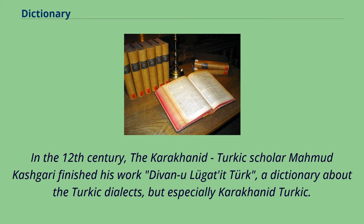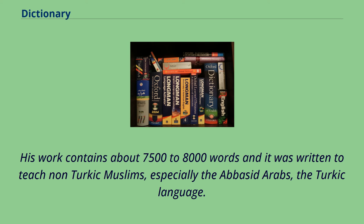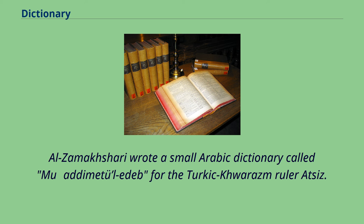In the 12th century, the Karakhanid Turkic scholar Mahmud Kashgari finished his work Diwan Lughat al-Turk, a dictionary about the Turkic dialects, but especially Karakhanid Turkic. His work contains about 7,500 to 8,000 words and it was written to teach non-Turkic Muslims, especially the Abbasid Arabs, the Turkic language. Al-Zamakhshari wrote a small Arabic dictionary called Muqaddimat al-Adab.